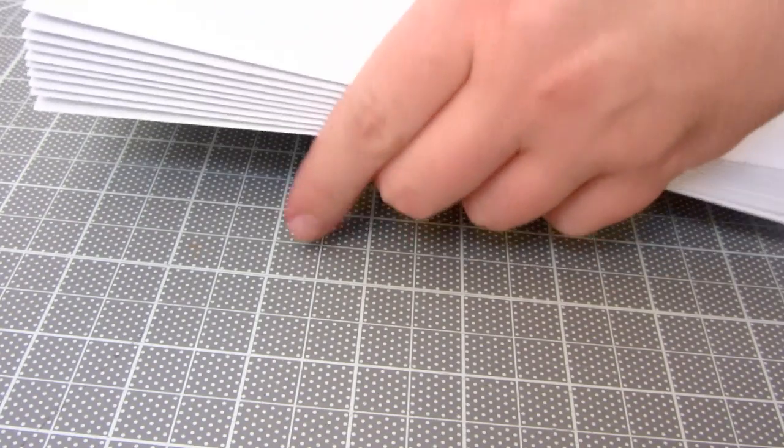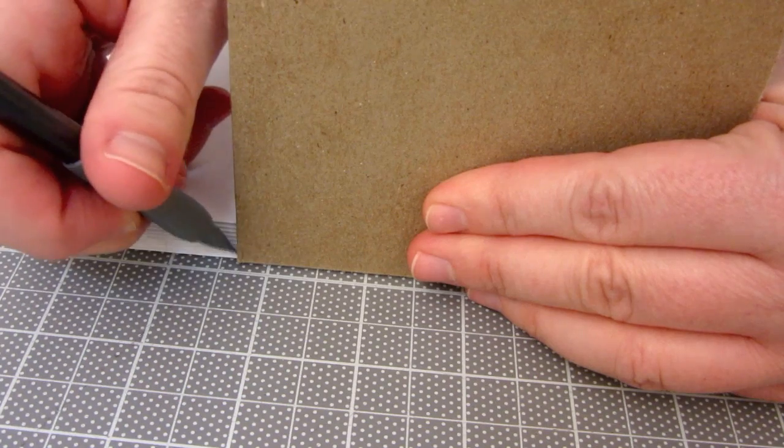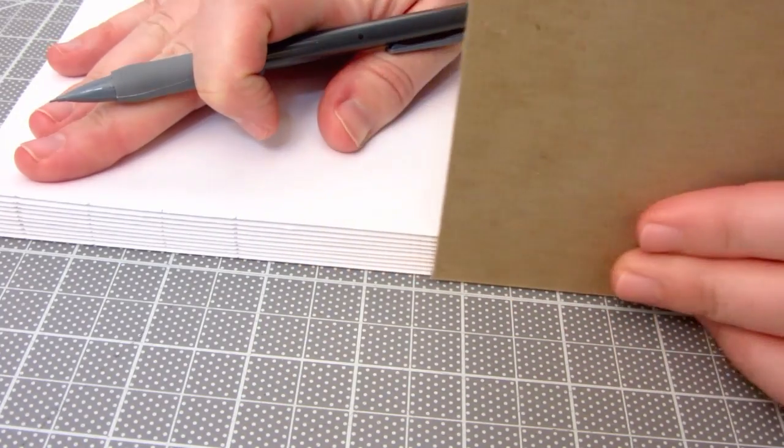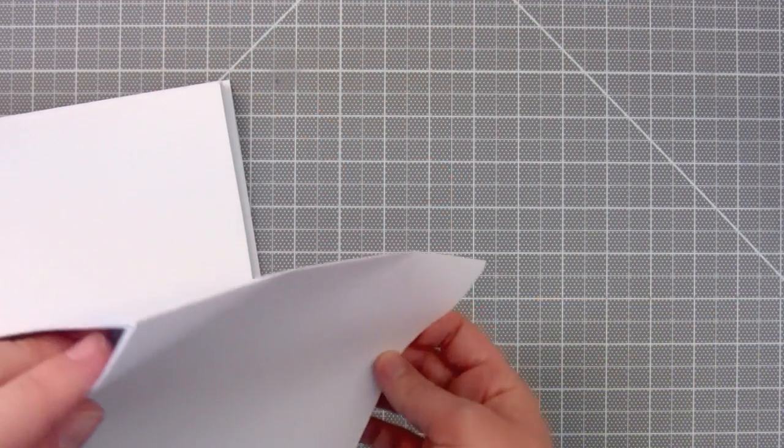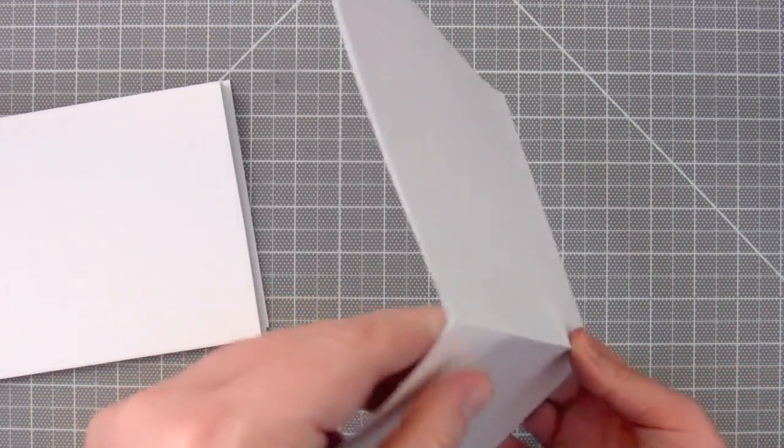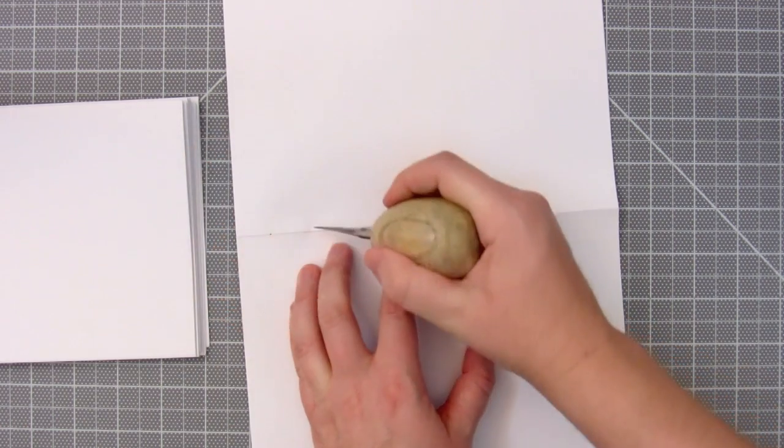Then stack all the signatures together, and using the marked one as the guide on the top, use something with a straight edge and mark the rest of the signatures like this. Then using an awl, pierce holes on the marks on each signature, and keep them stacked in their original order.